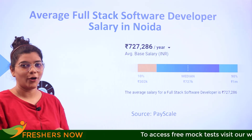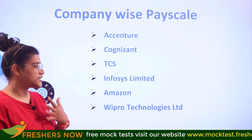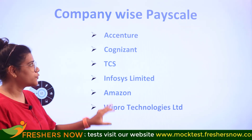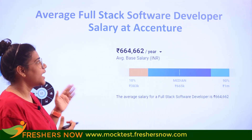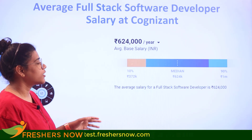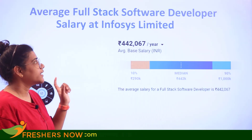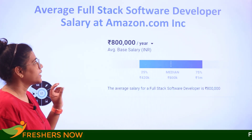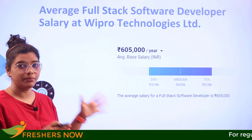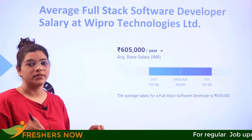Looking at how major companies in India pay: Accenture — ₹6 lakhs 64 thousand; Cognizant — ₹6 lakhs 24 thousand; TCS — ₹4 lakhs 50 thousand; Infosys — ₹4 lakhs 42 thousand per annum; Amazon — ₹8 lakhs per annum; and Wipro — ₹6 lakhs per annum on average.